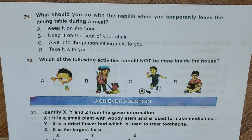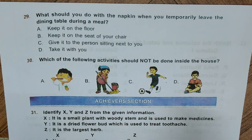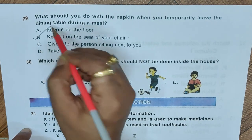Question 29: What should you do with a napkin when you temporarily leave the dining table during a meal? A. Keep it on the floor, B. Keep it on the seat of your chair, C. Give it to the person sitting next to you, D. Take it with you. Correct answer is B, Keep it on the seat of your chair.